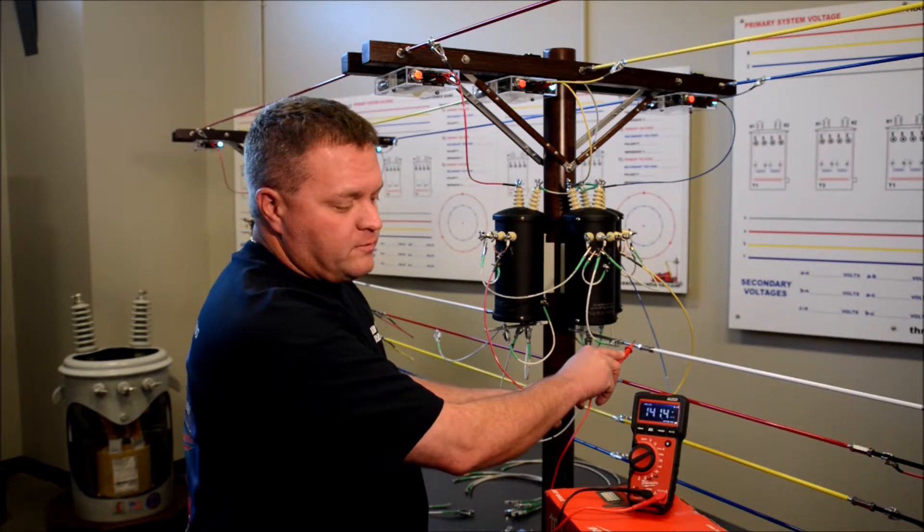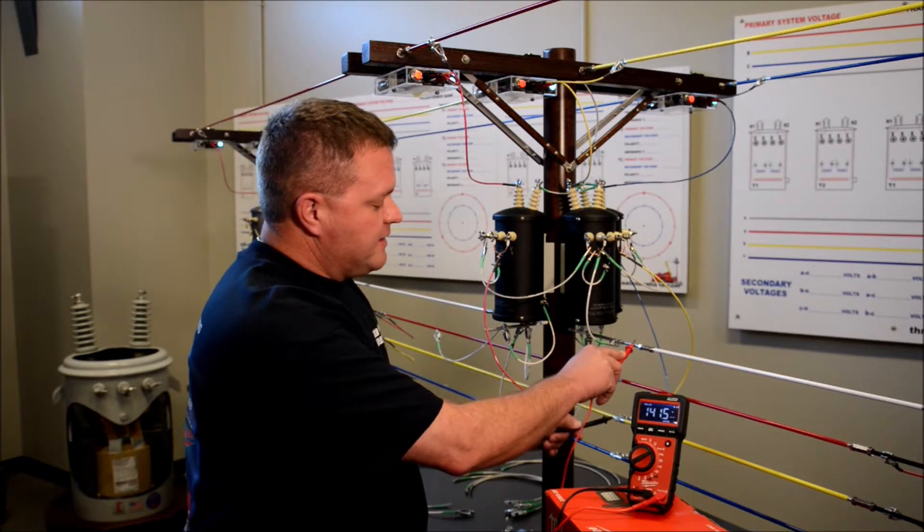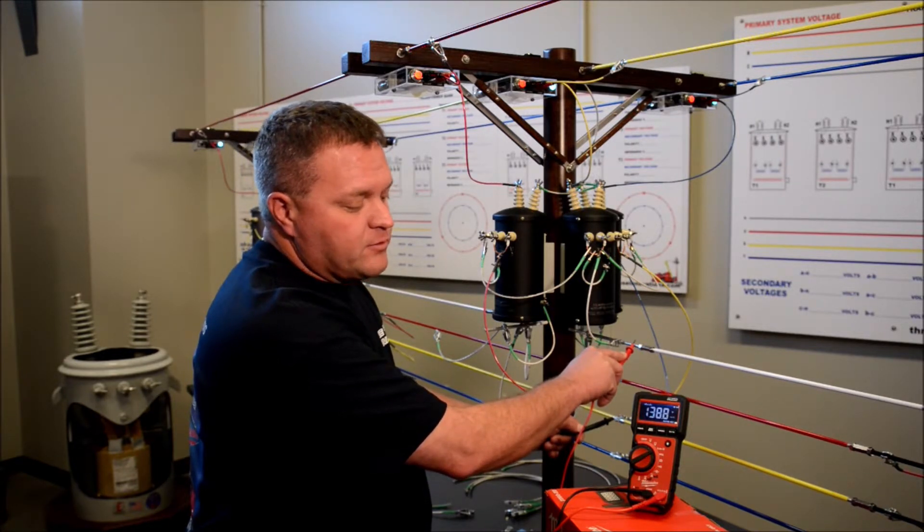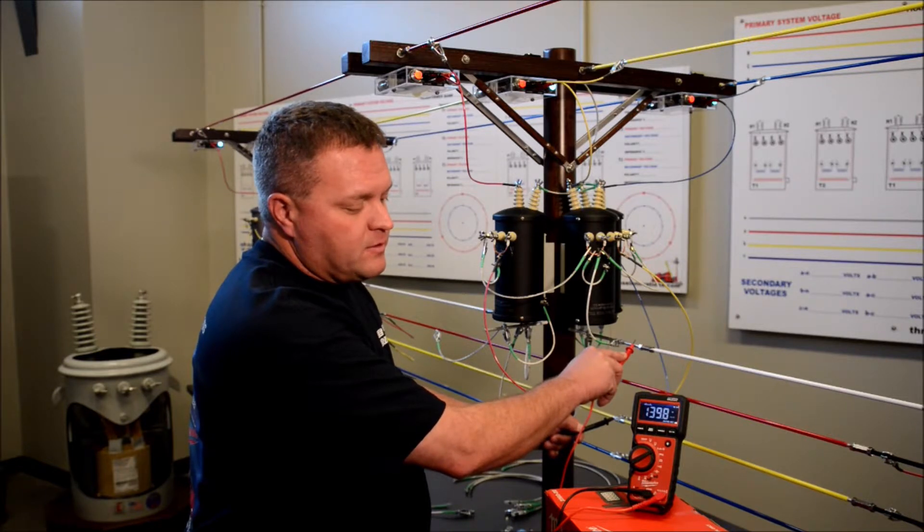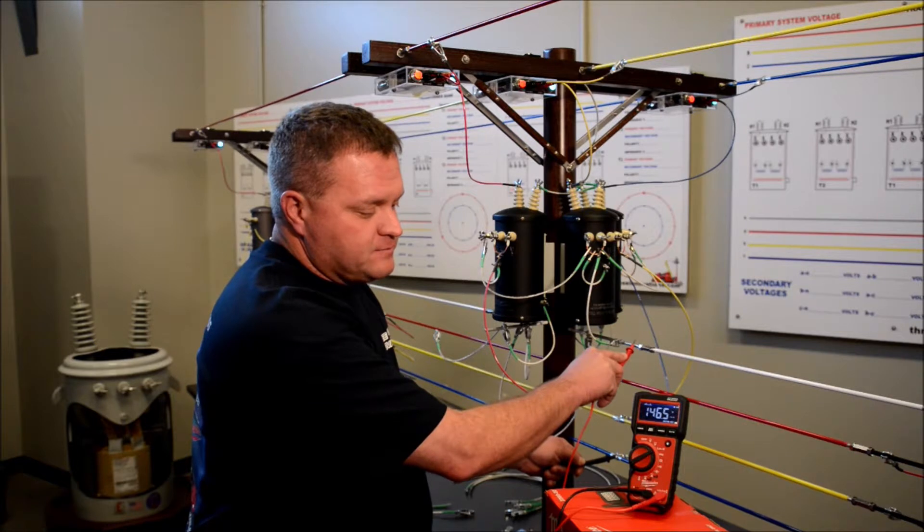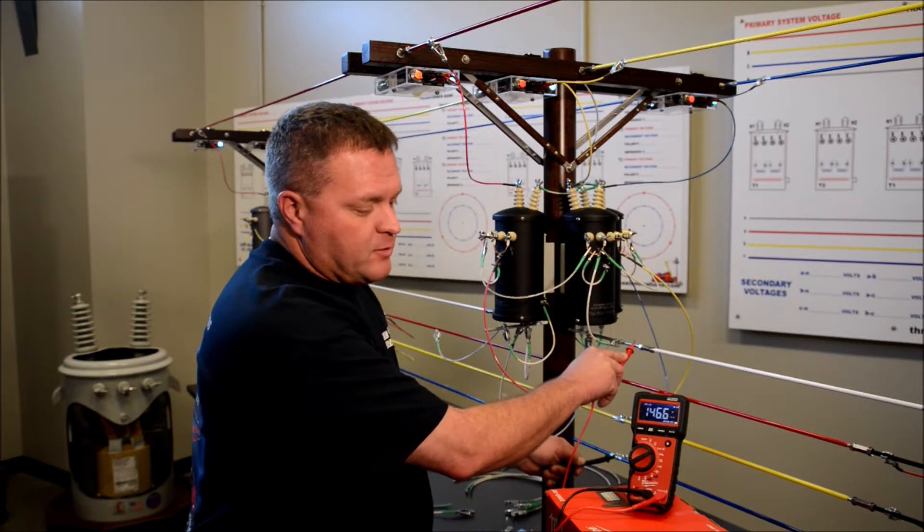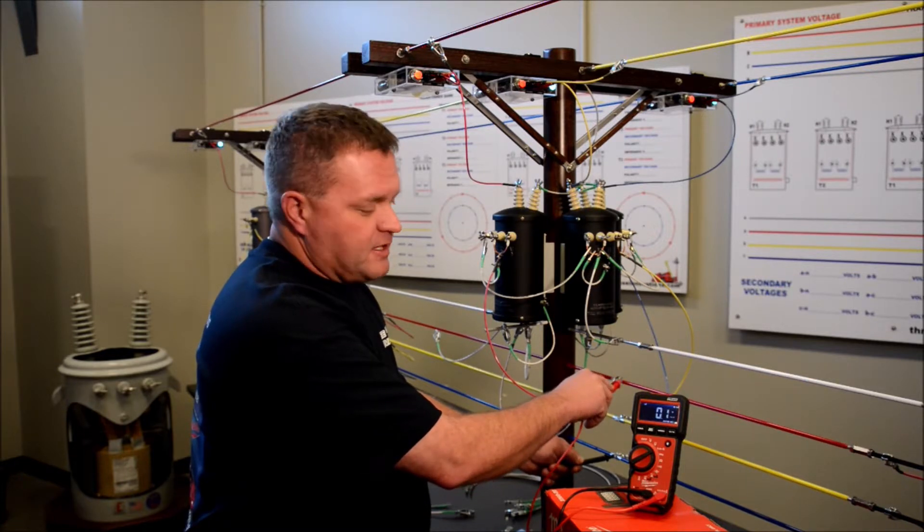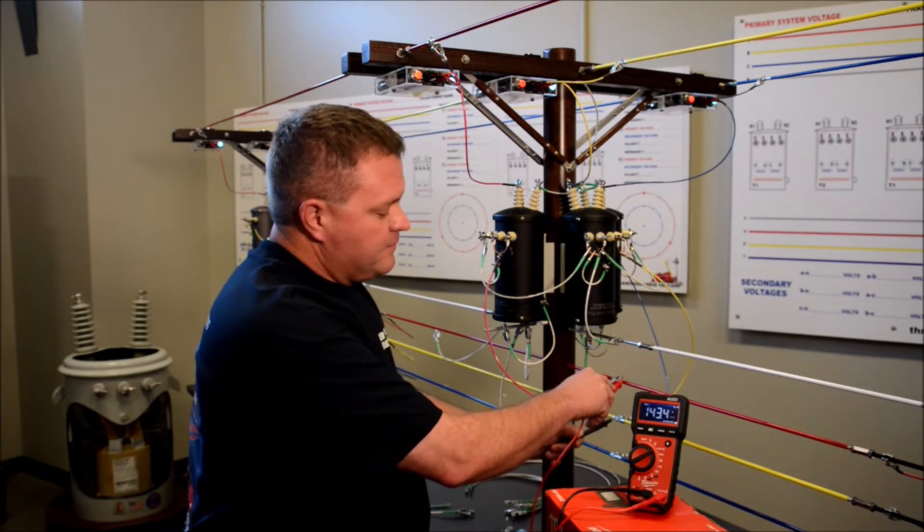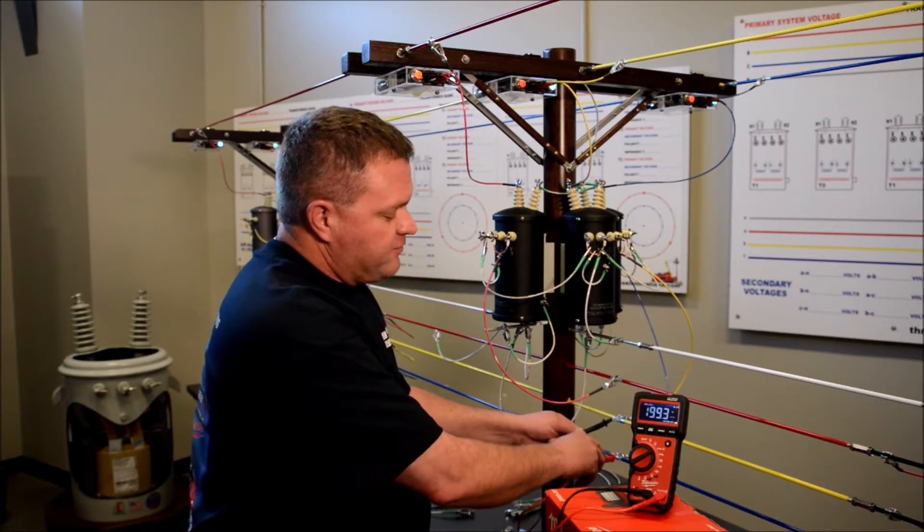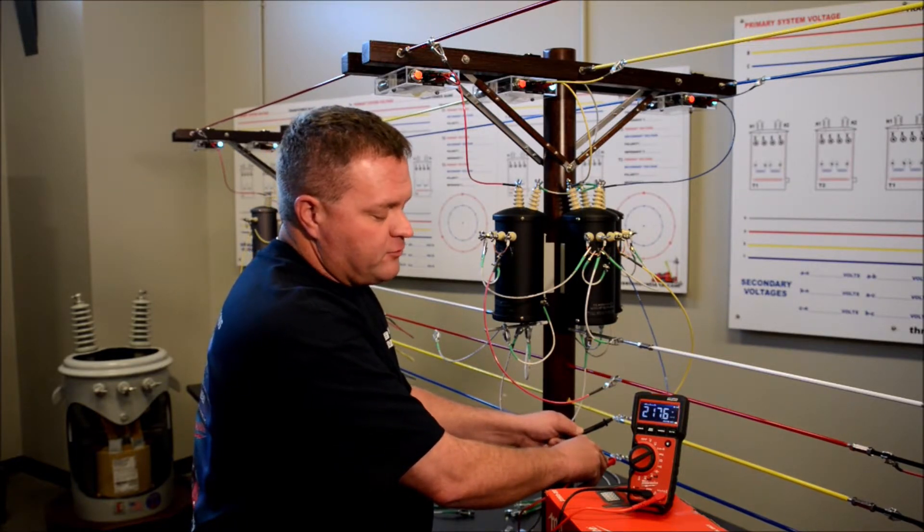So 141.4 for A, B - 137, 138, we're climbing on up there - 140. And C phase, a little bit higher, we got 146. Now we're going to go phase to phase. A to C, 214. A to B, 217. B to C, 217.